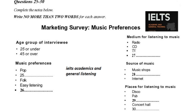Next point could be about where they actually get their music — do they buy it in music shops or department stores, or download it from the internet? That could be for recorded music. Then we need another section for live music — where do they go? Let's say disco, pub, club, concert hall, or opera house. We could include karaoke bars but there aren't many in this city, so we'll leave that out. That's everything. Now we can make a time scale for doing it. That is the end of section three. You now have half a minute to check your answers.